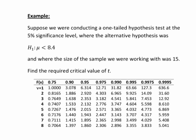So let's have a look at how this works in practice with an example. So suppose we were conducting a one-tailed hypothesis test at the 5% significance level where the alternative hypothesis was that mu is less than 8.4 and where the size of the sample we were working with was 15. Now obviously in practice if we did such a test we'd have other details too, such as the actual mean and standard deviation of the sample, or at least data so that we could calculate that, and a specific question we were addressing. But this information here is the key information we would need to find the critical value of T.